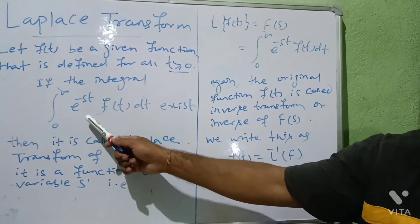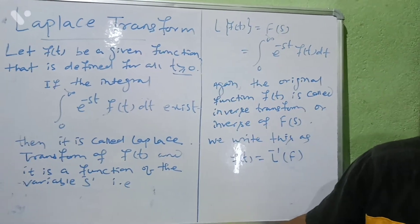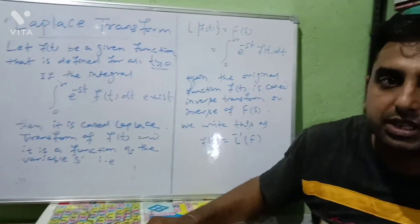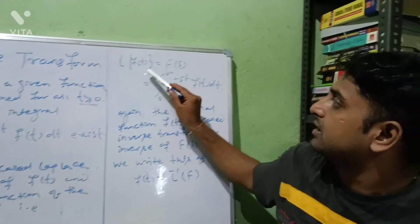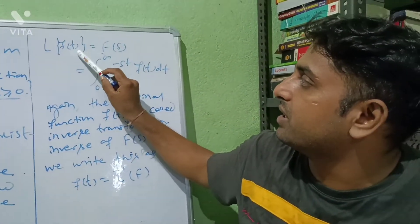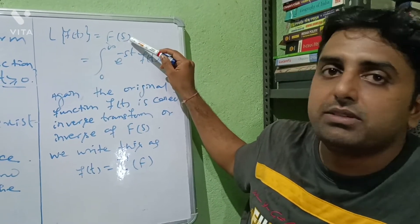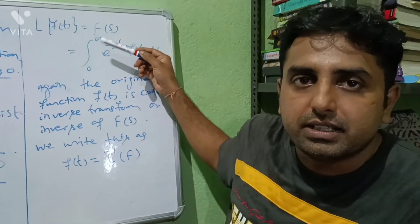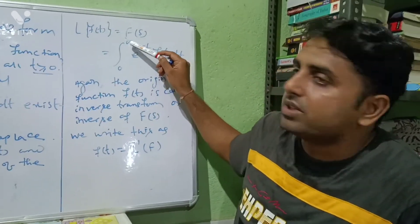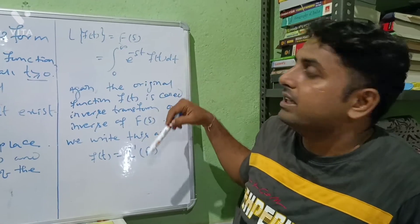Because if we integrate it, the resulting function will be a function of s. So we can write it as: Laplace of f(t) is equal to F(s), because the result is a function of s, and that is the integral from 0 to infinity of e^(−st) f(t) dt.